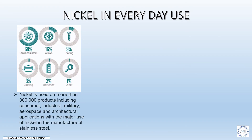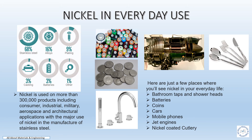Nickel is used in more than 300,000 products including consumer, industrial, military, aerospace, and architectural applications. The major use of nickel is in the manufacture of stainless steel. 68% of nickel is used for manufacturing stainless steel, 16% is used for making alloys, 9% is used for plating, 3% is used for casting and batteries, and 1% is used for other purposes. Examples of nickel in everyday life include bathroom taps, shower rails, batteries, coins, cars, mobile phones, jet engines, and nickel-coated cutlery.